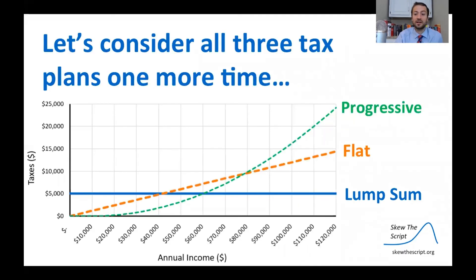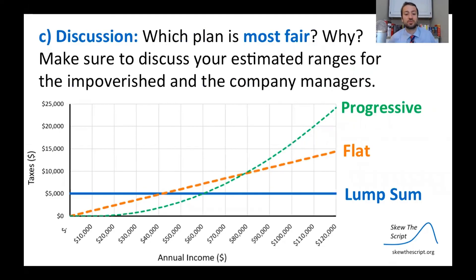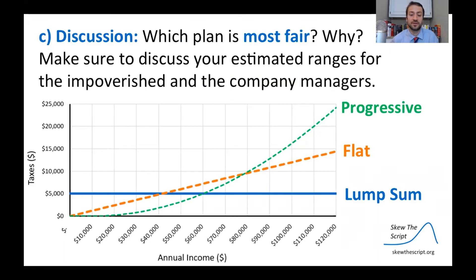Putting it all together — considering your answers to the two previous questions — look at all three tax plans one final time. The main discussion point is: which of these plans do you think is the most fair, and why? When you respond and discuss with your classmates, make sure to include your estimated ranges for the impoverished and the company managers in your answer. That's all for today — we'll see you next time on Skew the Script.